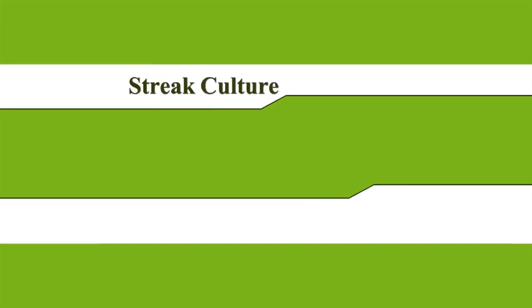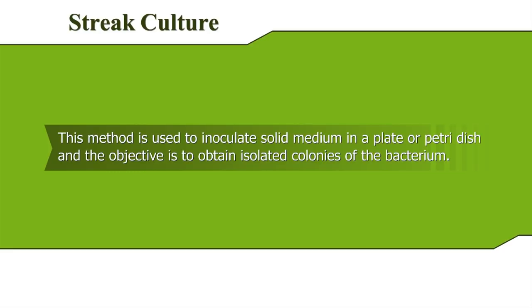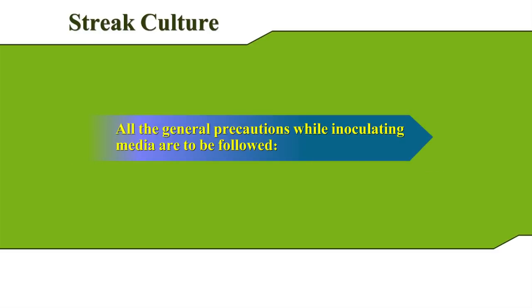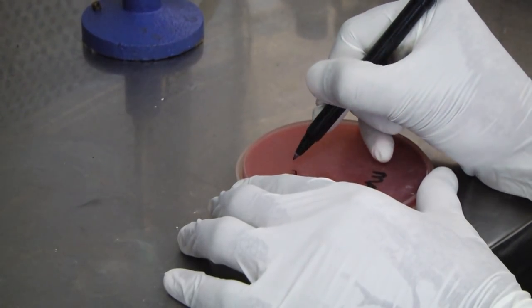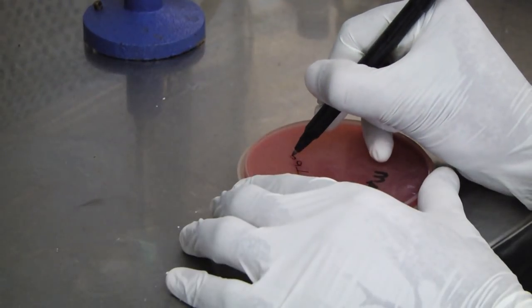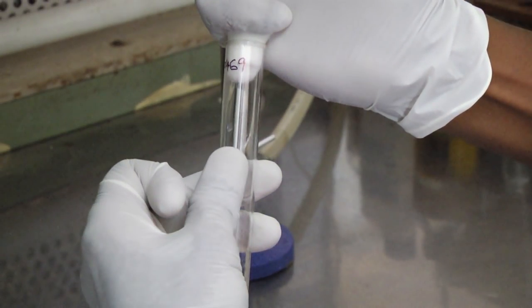Streak Culture. This method is used to inoculate solid medium in a plate or petri dish and the objective is to obtain isolated colonies of the bacterium. All the general precautions while inoculating media are to be followed. Label the base of the plate before you start the procedure. Loosen the cap or cotton wool plug of the bottle or test tube containing the broth culture.